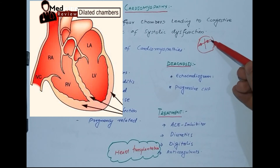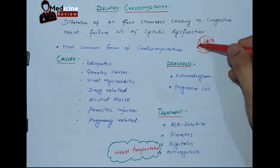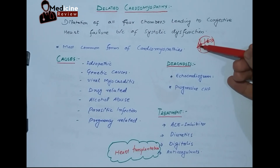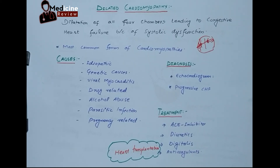As the cardiac chambers become wider, the competency of the tricuspid valve and mitral valve becomes very loose. So there is regurgitation of the blood — tricuspid regurgitation and mitral regurgitation — which allows the backflow of blood, further worsening the congestive heart failure. In dilated cardiomyopathy, the main pathogenesis is the dilation of the four chambers, and because of systolic dysfunction, tricuspid regurgitation, and mitral regurgitation, there will be congestive heart failure.